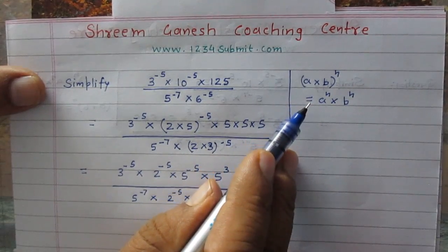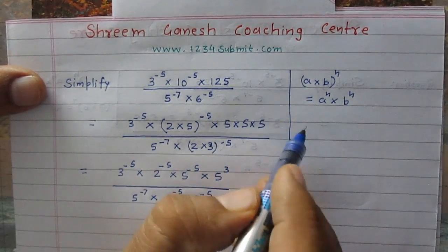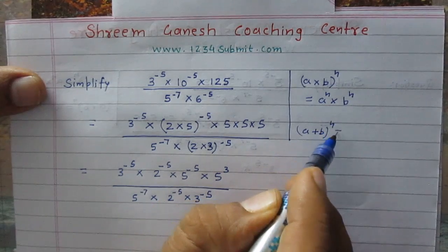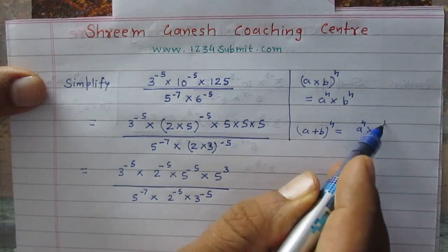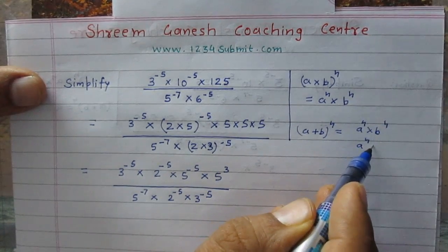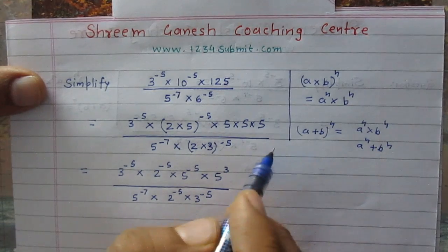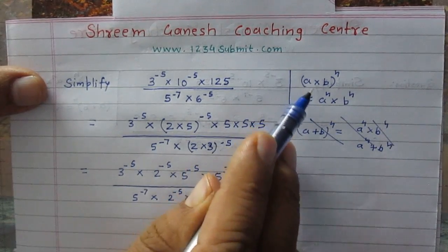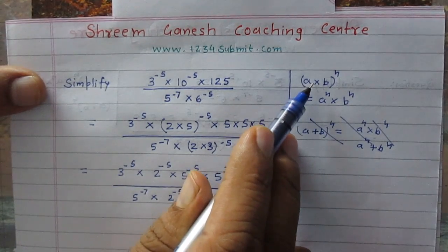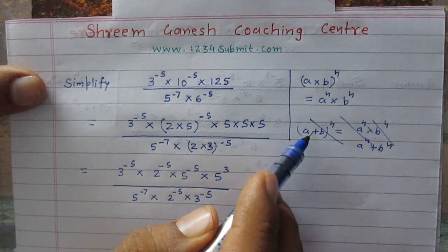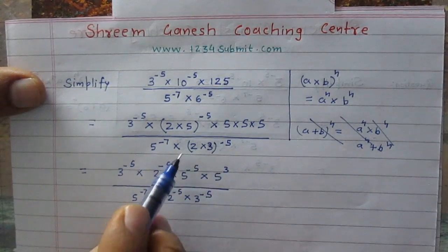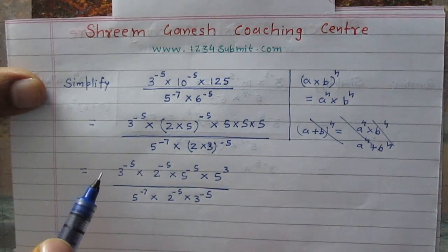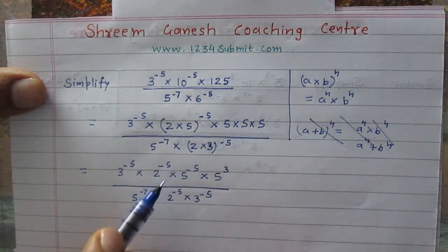Some students use this identity in the wrong way — for example, writing (a plus b) raised to power n as a raised to power n multiplied by b raised to power n, or a raised to power n plus b raised to power n. But this is wrong; you cannot use this identity in these ways. Before applying this identity, check whether there is a multiplication sign or an addition sign. Here we have multiplication signs between 2 and 5, and between 2 and 3, so the identity applies.